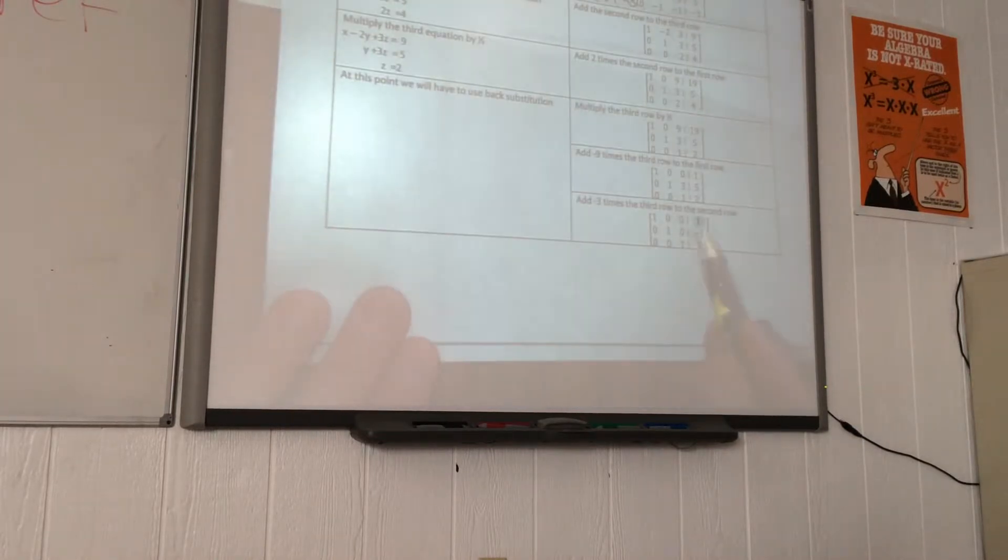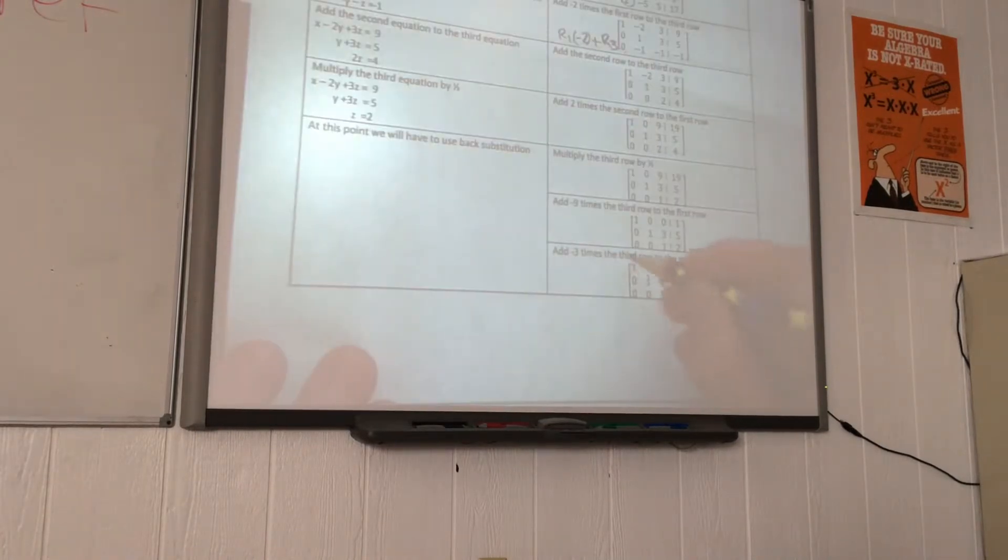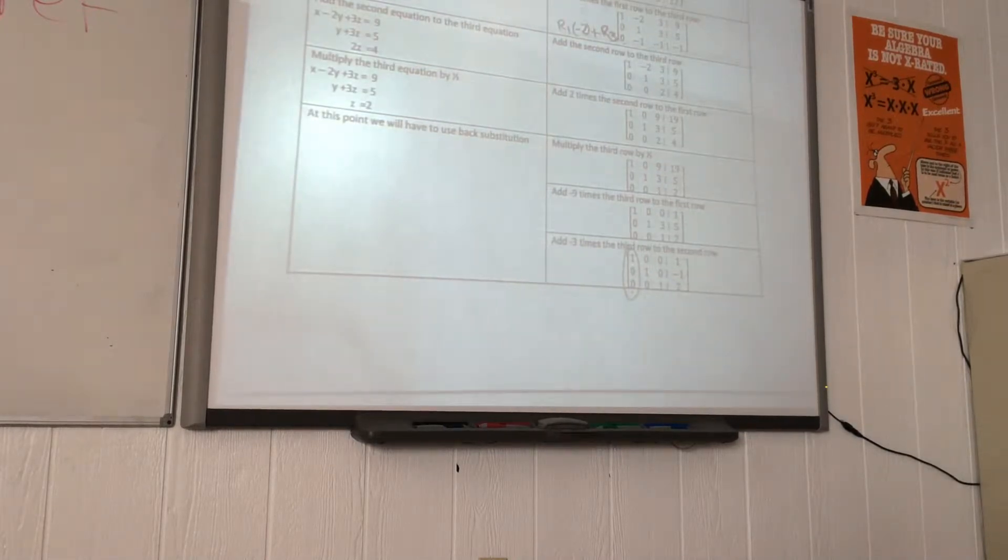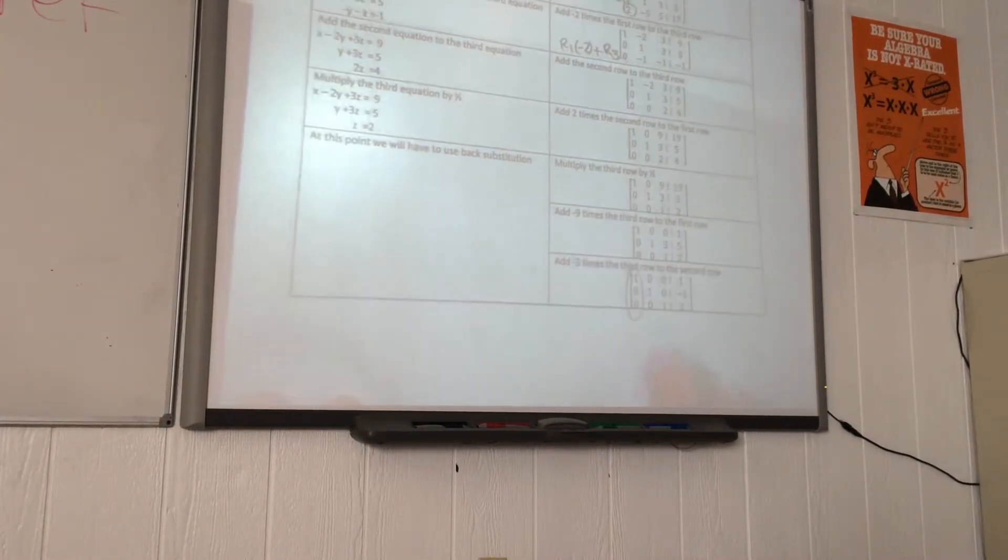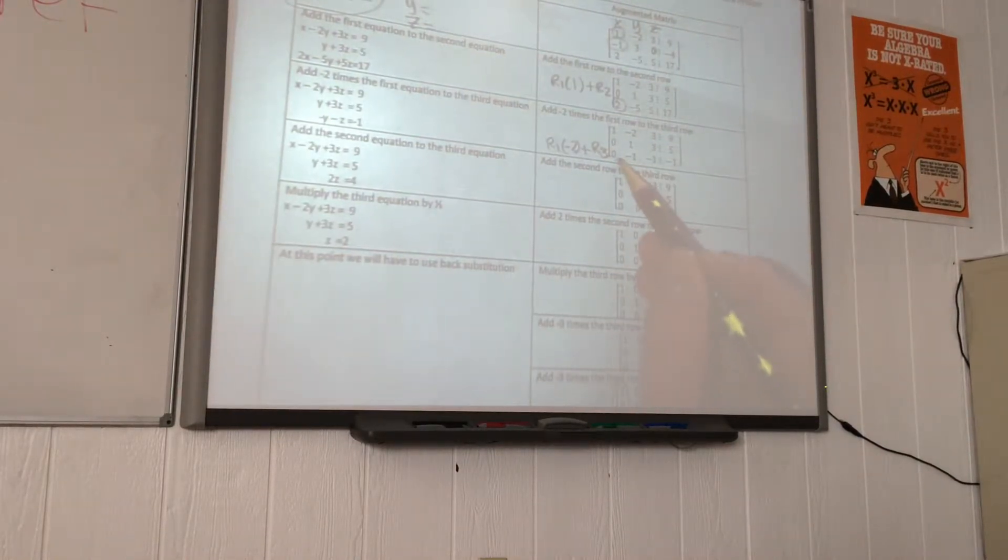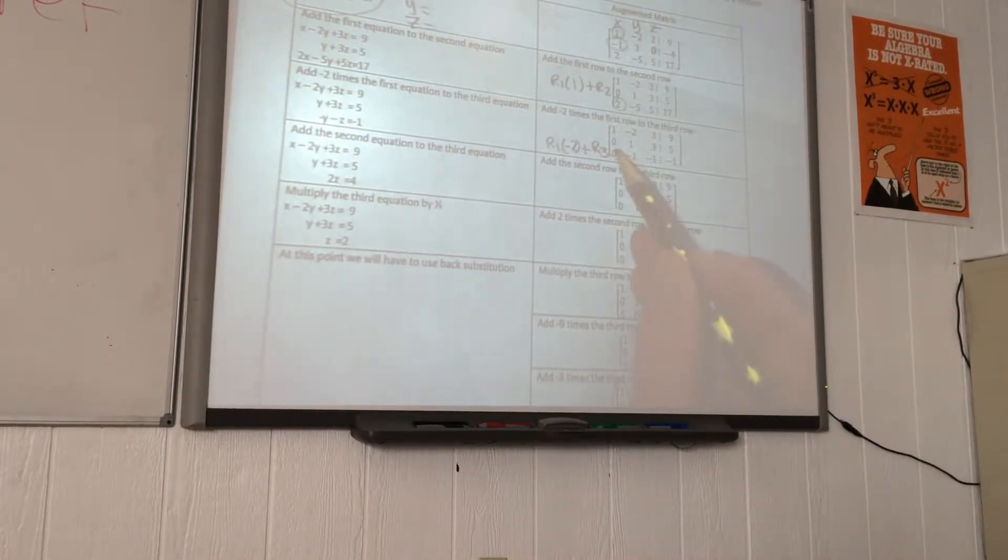Our goal is to get identity on the left side, so we work by column. Once you have that 1, we make the other two zeros. That's why we're using the additive inverse. Now we're done with the first column. We move to the second column.